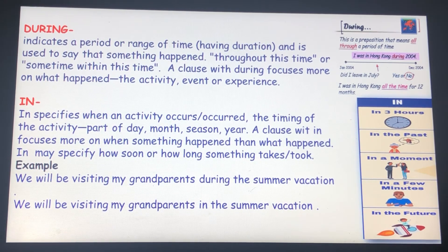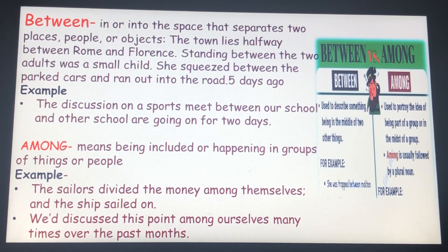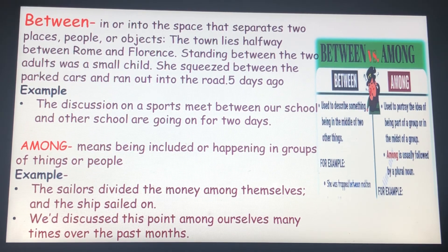Between and among. 'Between' is used when naming definite individual items. 'Among' is used when the items are part of a group and are not specifically named. Example: The sailors divided the money among themselves and the ships sailed on. We had discussed this point among ourselves many times over the past months. In both sentences, 'among' specifies the association or connection with being surrounded by a group.